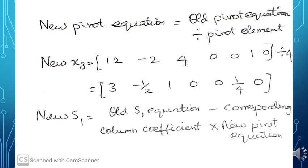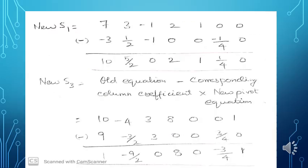New S1 = old S1 equation minus the corresponding column coefficient (which is -1) times the new pivot equation. Old S1 row: [7, 3, -1, 2, 1, 0, 0]. Minus (-1) × [3, -1/2, 1, 0, 0, 1/4, 0]. On subtracting, we get new S1 = [10, 5/2, 0, 2, 1, 1/4, 0].